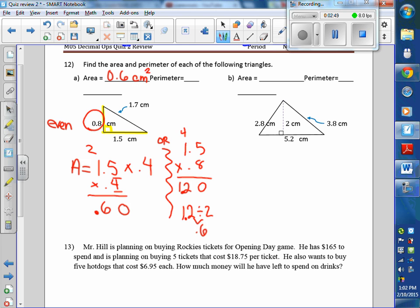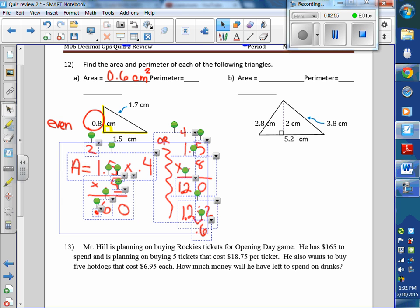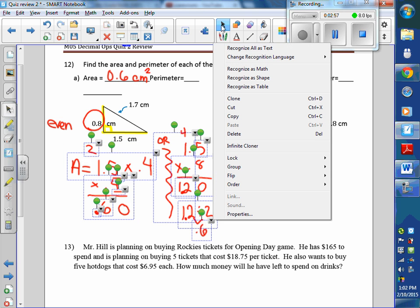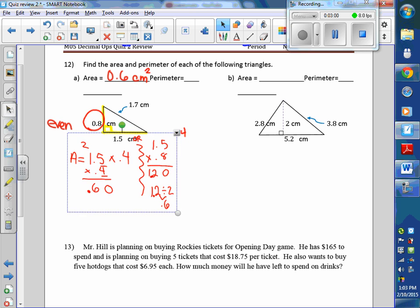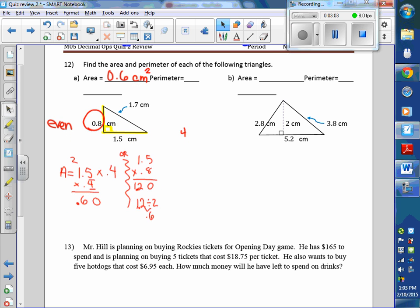And then perimeter. So I'm going to shrink this up a little bit. A little room for perimeter. Okay, so for perimeter, you just add. That's a bad arrow. 1.7, 1.5, 0.8. 20, so 4.0. Line up your decimals when you add it, subtract.